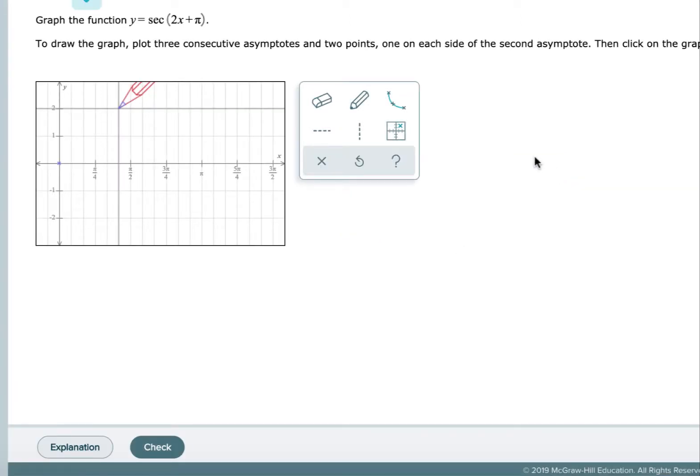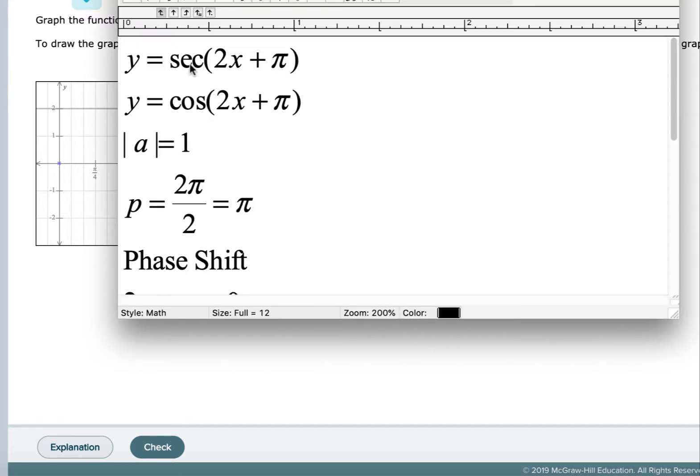In our example, we're asked to graph the function y equals the secant of 2x plus π. Normally I would write this out on a piece of paper, but since I'm doing a movie, I'm going to use MathType to capture what I would write on paper. So I've opened up MathType and I've typed in y equals the secant of the quantity 2x plus π.